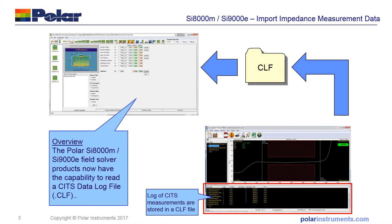The SI8000 allows you to calculate the normal impedance and simulate the minimum and maximum according to the tolerance of the width, thickness, coating, or dielectric height involved in the structure. What's new in this latest version is the ability to connect with the SITS controlled impedance test system and take the log data through the SITS log file in order to display the logged actual impedance data against the predicted values.